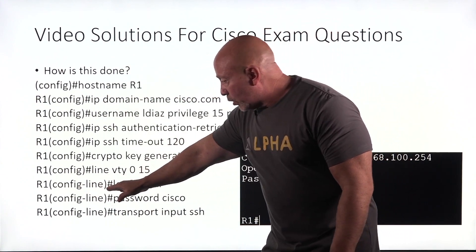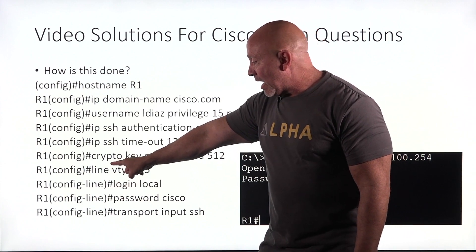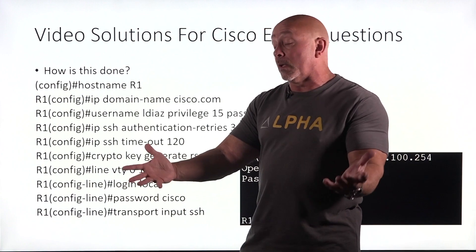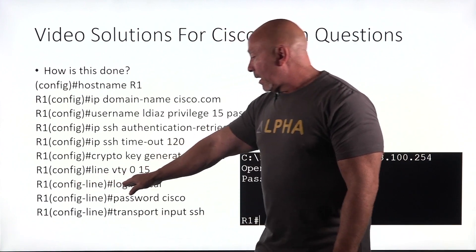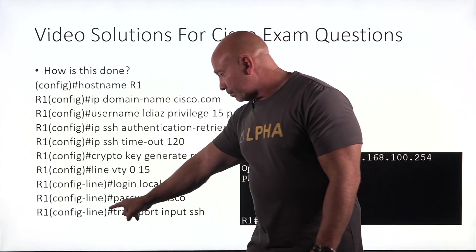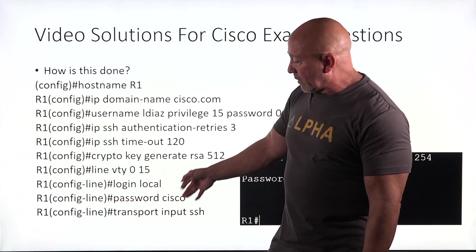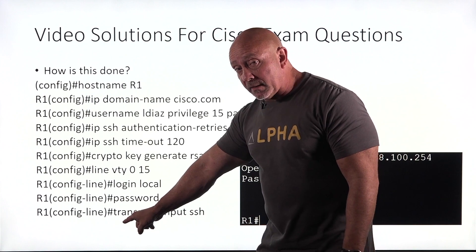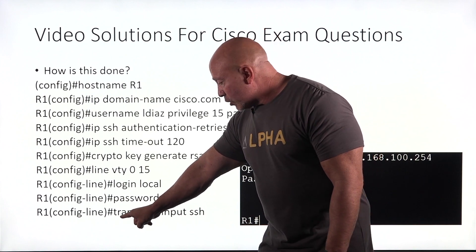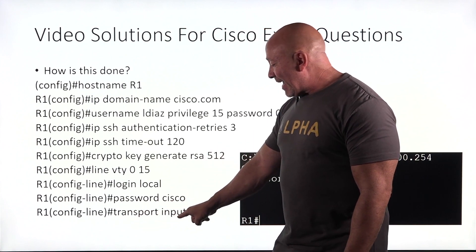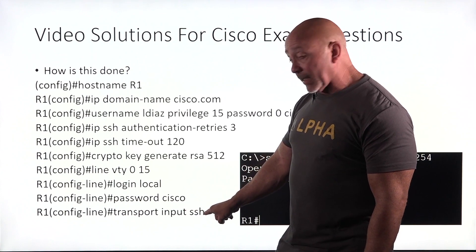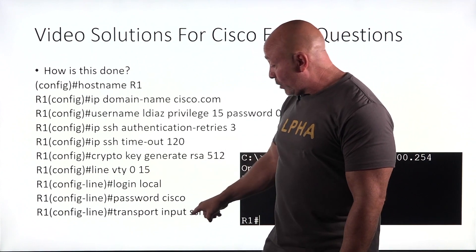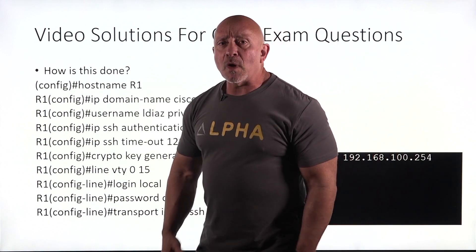Then you go to your line VTY — all your terminal lines, however many you want to allow. Set login local to use the local username and password. Key point here: transport input SSH. That is how you make it use SSH. If you do not put this, you're not going to be able to SSH.